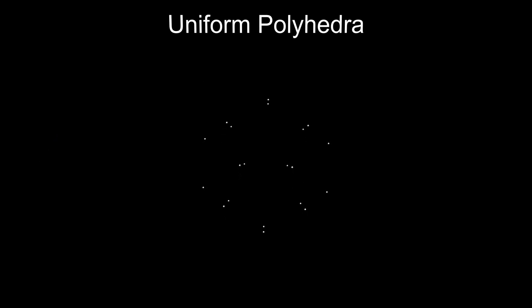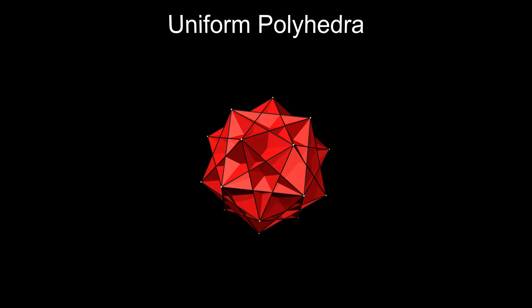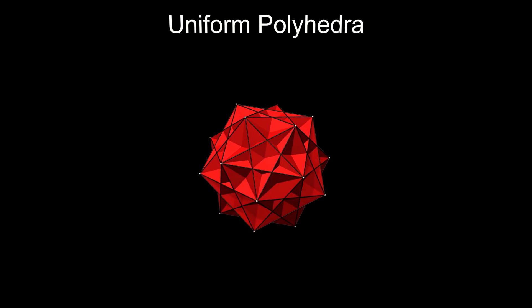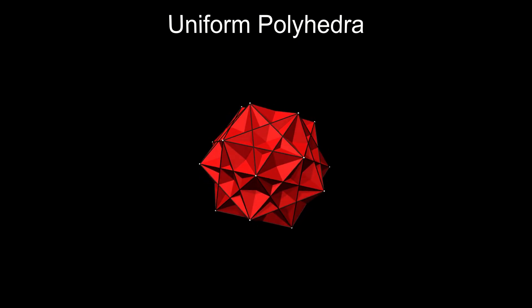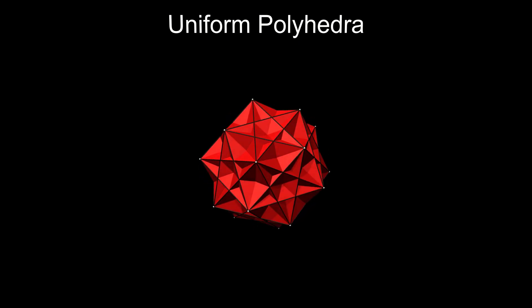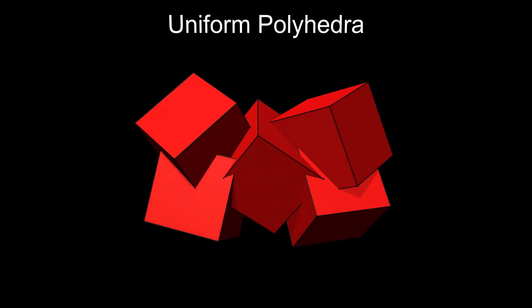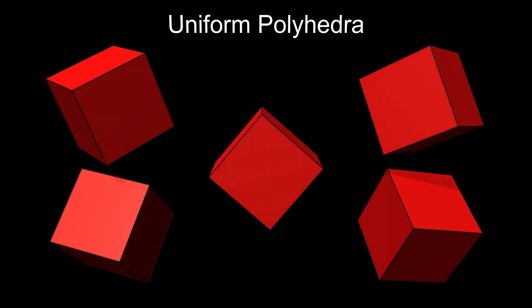As a side note, there is another faceting of the dodecahedron by squares. This might be mistaken for another uniform polyhedron, but it separates into five cubes, so it's actually a polyhedron compound.